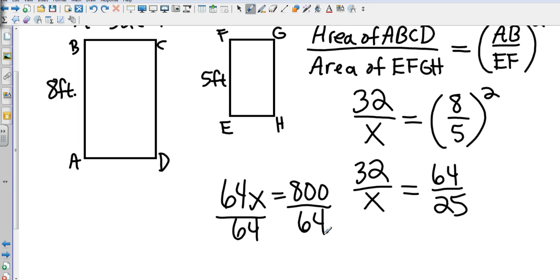that's 12 and a half, or 12.5 square feet. Okay, so just substituting into the formula, area of the first one over area of the second one equals the scale factor of the sides that are given.